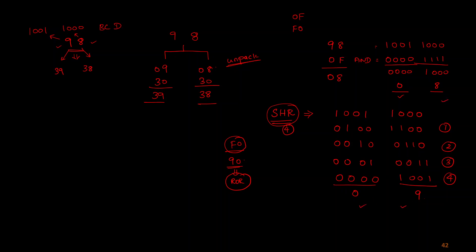Now I simply add 30 to each separated value. I move 08 into AL and 09 into AH, then add 3030 to AX. This gives me 39 and 38. That completes the conversion. One more approach: instead of addition, I can also use an OR operation with 3030 to achieve the same result.